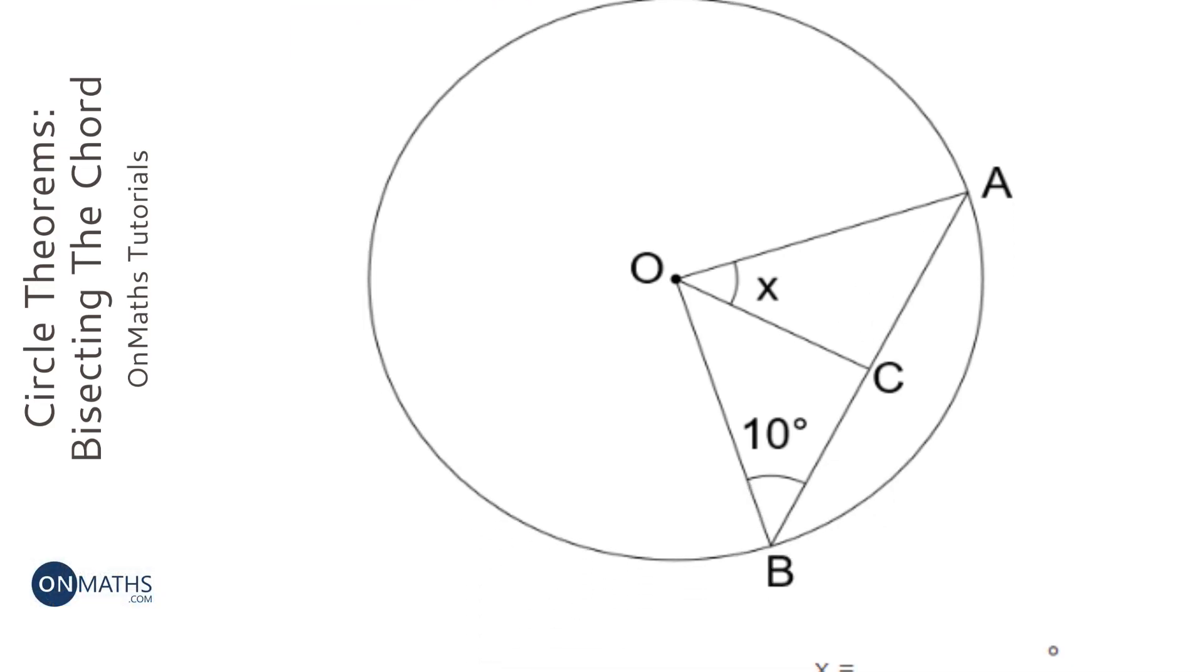So if C is the midpoint, we know then this line from the centre here, this line from the centre, that's going to be a bad line, so let's try that better. This line from the centre is going to bisect it.